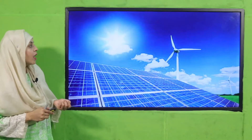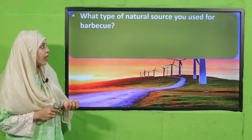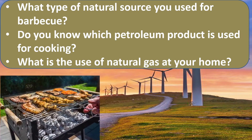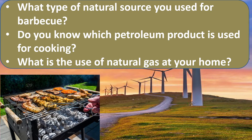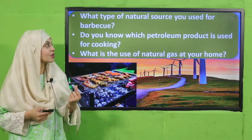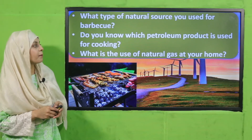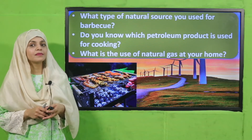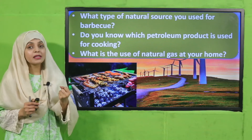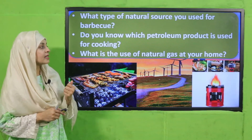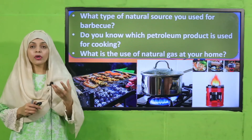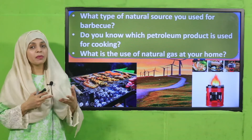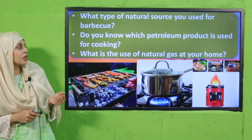Wind generates electricity. Very good. Now let's start with an activity. What type of natural sources do you use for barbecue? Barbecue karne ke liye aap konse natural sources ko use karte hain? Coal is used. Next, do you know which petroleum product is used for cooking? Apke ghar mein konsi cheez cooking ke liye use hoti hai? Natural gas. What is the use of natural gas at your homes? It is used for cooking and also in geysers and heaters to keep us warm.